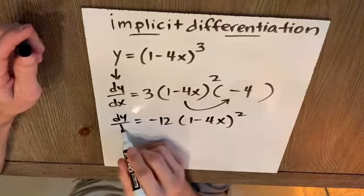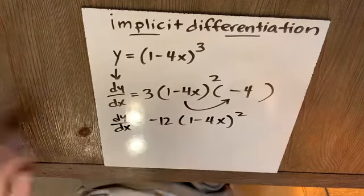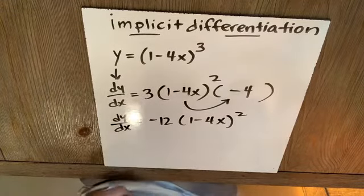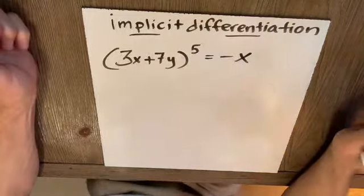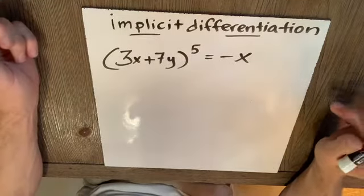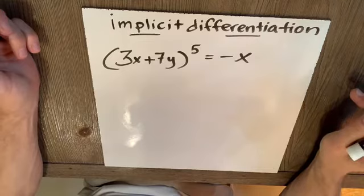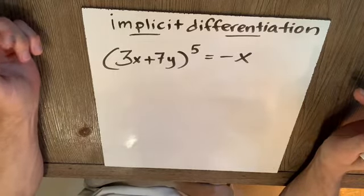Remember those days when we had y all alone all the time? Isn't explicit differentiation so easy in comparison? Compare that to this dragon. Oh boy, we can't get y all alone very easily. So let's use implicit differentiation.